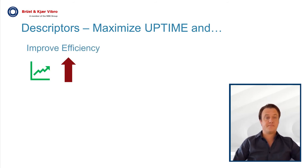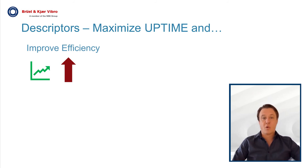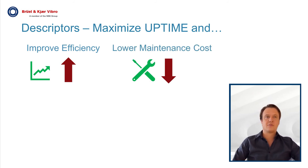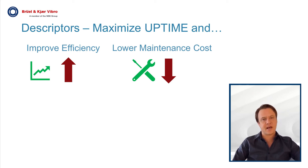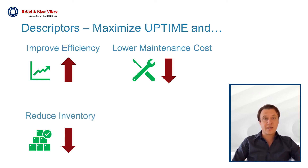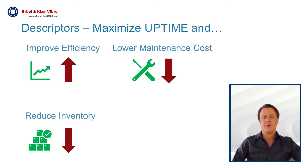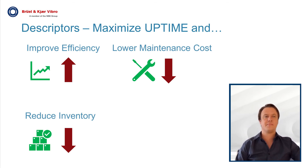Improved efficiency — keep the production running and maximize throughput. Lower your maintenance costs — avoid unplanned stoppages and optimize labor through just-in-time maintenance. Reduce inventory — minimize spares holding especially for expensive parts by predicting the remaining useful life of those components.